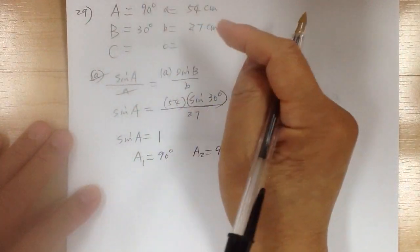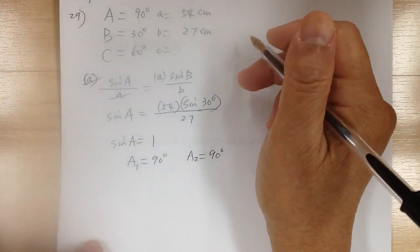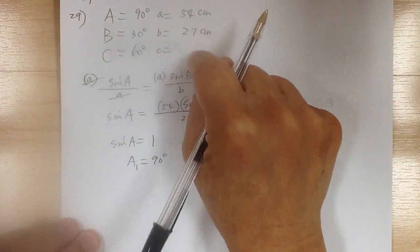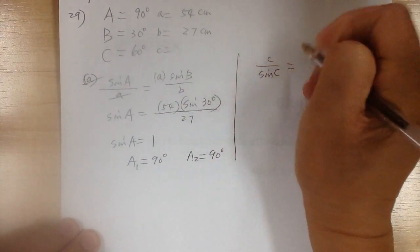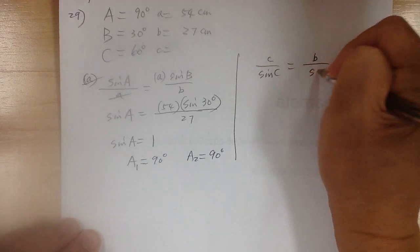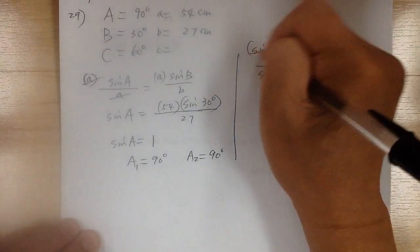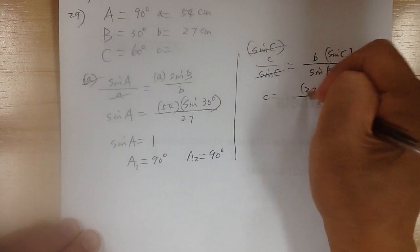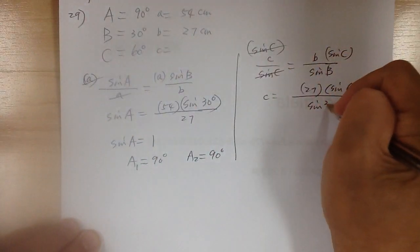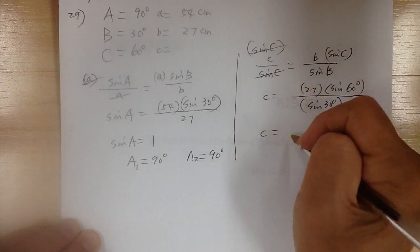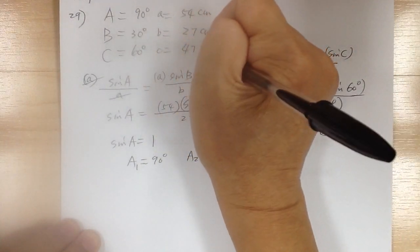Notice that this is going to be a 30-60-90 special triangle. So use 180 minus 90 minus 30, which gives you 60 degrees. You can use the special triangle or just use the regular law of sines. So C over sine C equals B over sine B. Multiply by sine C. So C equals 27 times sine of 60 degrees over sine of 30 degrees. You get C equals 46.765, rounded to 47 centimeters.